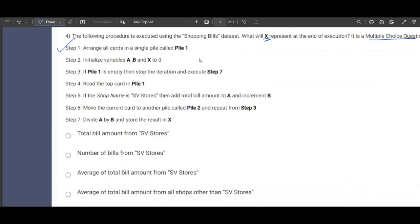Step one: arrange all cards in a single file called Pile 1. A, B, and X. Always remember this point. Please make a note of the variables which have been initialized in the beginning itself on a rough sheet, which makes the process of tracking its values very easier. If Pile 1 is empty then execute step seven. This has to be kept alive or remembered.